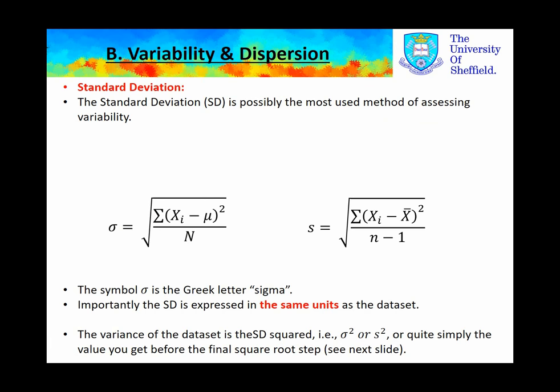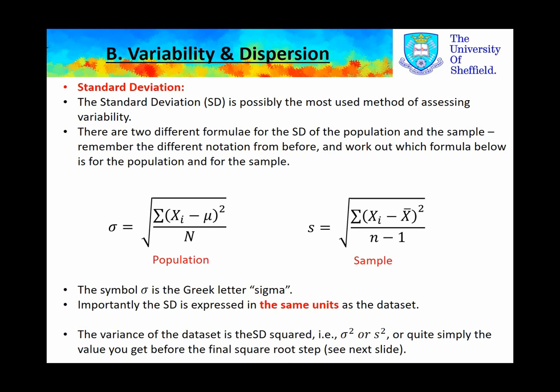The standard deviation is a measure of variability around the mean. Here we have the two different equations which are related to the sample and the population. The population on the left, and the sample on the right. Note two important differences: on the right-hand side, we subtract 1 from the total number of samples, the total number of data points, before dividing. Importantly, the standard deviation is expressed in exactly the same units as the data set.